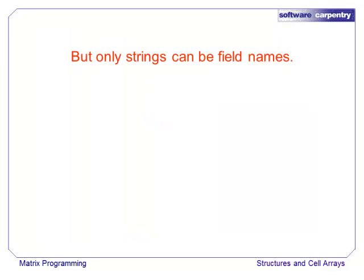However, in a structure, the only legal type of field name is a string. Numbers are not allowed. If you need to use numbers as your storage parameters, MATLAB provides cell arrays, which is our next topic.